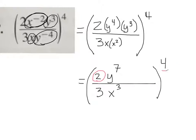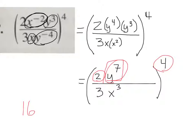So let's raise it all to the fourth power. 2 to the fourth power is 2 times 2, which is 4, times 2, which is 8, times 2, which is 16. So I've got 16, and then y to the seventh being raised to the fourth power — that's called a power to a power. So that's going to be y to the 28th. Remember, power to a power, you multiply the exponents.